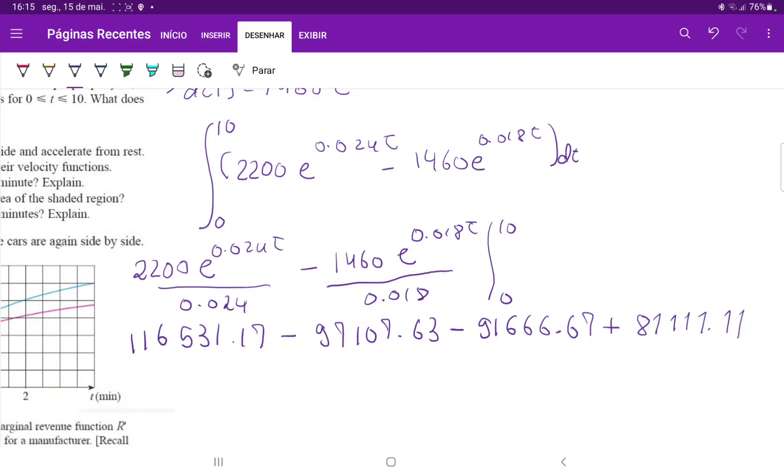and then plus 116531.17. So this gives us a total of 8867.98, so roughly 8868.